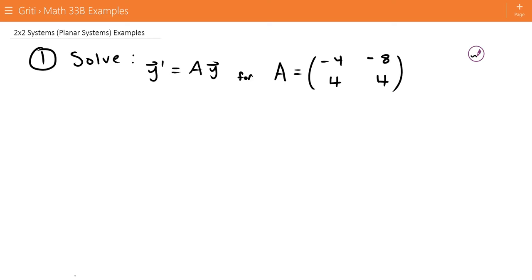First thing we have to do is find what our eigenvalues are. We do that by taking the determinant of A minus lambda I and setting that equal to 0. We can use the equation lambda squared minus the trace of A lambda plus the determinant of A equals the determinant of A minus lambda I to make this easier.